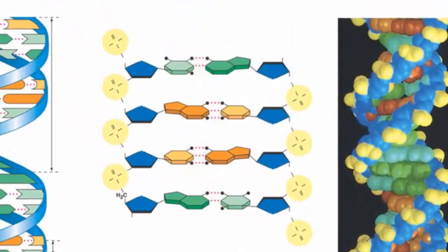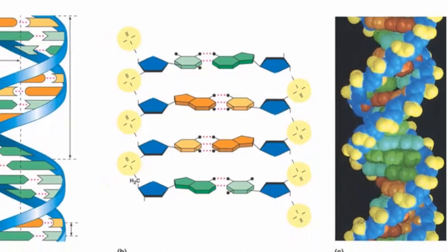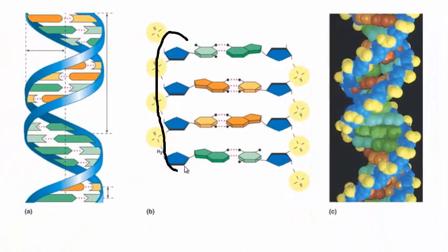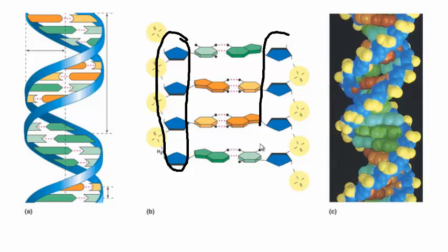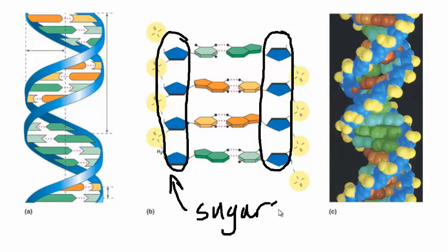At the sides, right here in blue, are the sides of our ladder. These are sugars. Remember we talked about sugars back in biochemistry and the one we are most familiar with glucose, which was a six-carbon sugar. This is a five-carbon sugar. In the case of DNA, it's called deoxyribose.